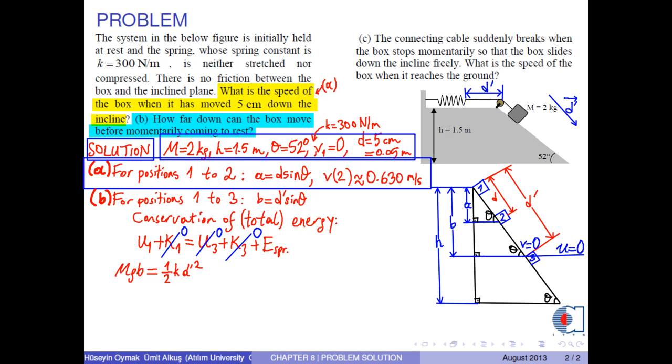Here, B is D prime times sin θ. D prime is common at both sides, so we obtain... From this equation, we get an expression for D prime as...